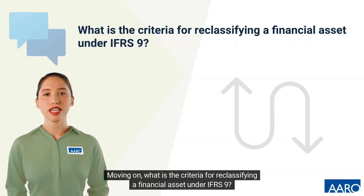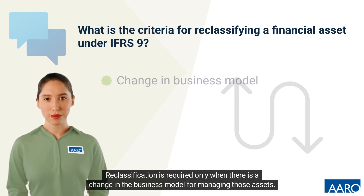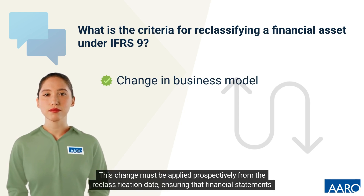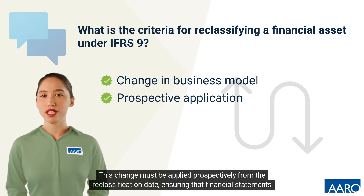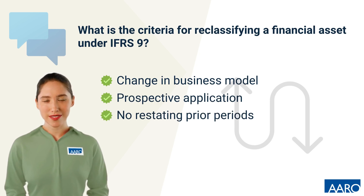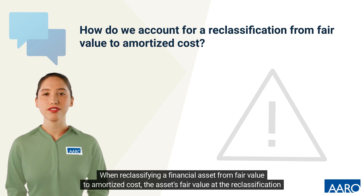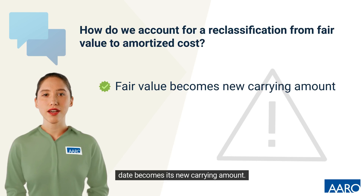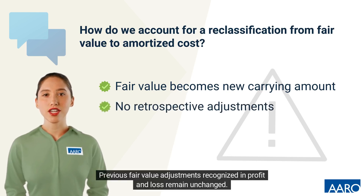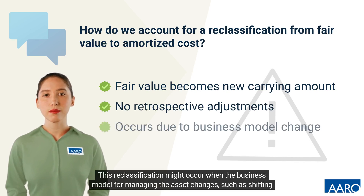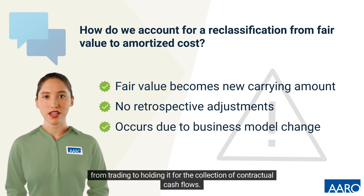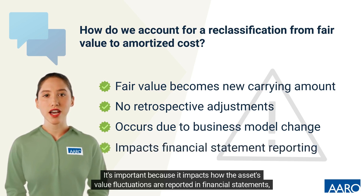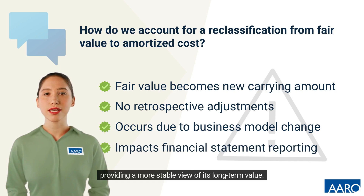Moving on, what is the criteria for reclassifying a financial asset under IFRS 9? Reclassification is required only when there is a change in the business model for managing those assets. This change must be applied prospectively from the reclassification date, ensuring that financial statements reflect current management strategies accurately. When reclassifying a financial asset from fair value to amortized cost, the asset's fair value at the reclassification date becomes its new carrying amount. Previous fair value adjustments recognized in profit and loss remain unchanged. This reclassification might occur when the business model for managing the asset changes, such as shifting from trading to holding it for the collection of contractual cash flows. It's important because it impacts how the asset's value fluctuations are reported in financial statements, providing a more stable view of its long-term value.